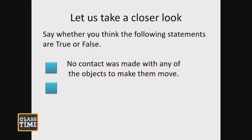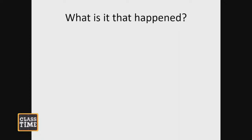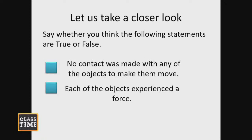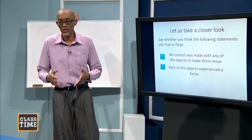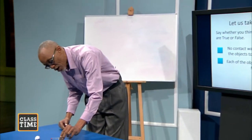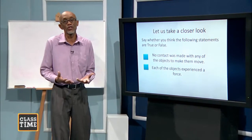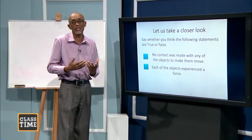I'm going to put two statements. I want you to see whether these statements are true or false. First one: no contact was made with any of the objects to make them move. And secondly, each of the objects experienced a force. Was contact made with any of the objects? No. The magnet just hovered over the coin and the coin moved. For the coin to move, it must experience a force — it was at rest, and then it went up to the magnet.